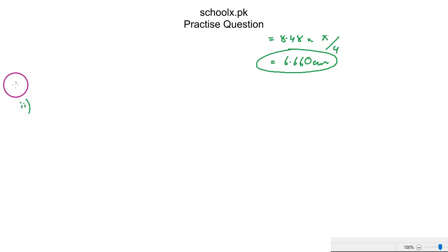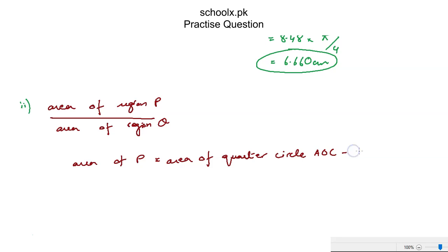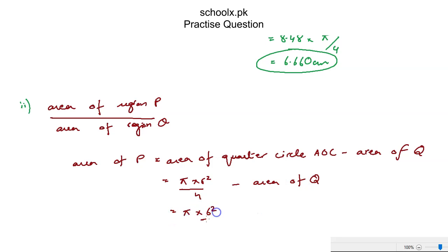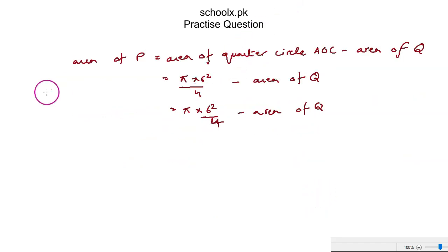For part 2, area of P equals the area of quarter circle COC — so area of quarter circle — which is π times 6 squared over 4, minus the area of Q.